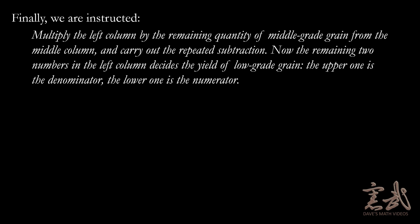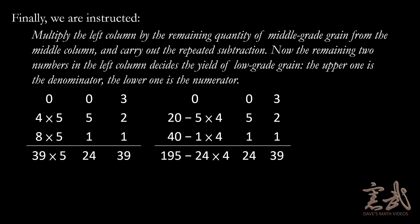Finally, we are instructed to multiply the left column by the remaining quantity of middle grade grain from the middle column and carry out the same subtraction. Now, the remaining two numbers in the left column decides the yield of the low-grade grain. The upper one is the denominator and the lower one is the numerator. So, essentially, we repeat the same process that we did, except now because there were five sheaves of remaining middle grade grain, we multiply all of the remaining numbers in the left-hand column by five. And then we do the associated subtraction, which gives us in the left-hand column zero, zero, thirty-six, and ninety-nine.